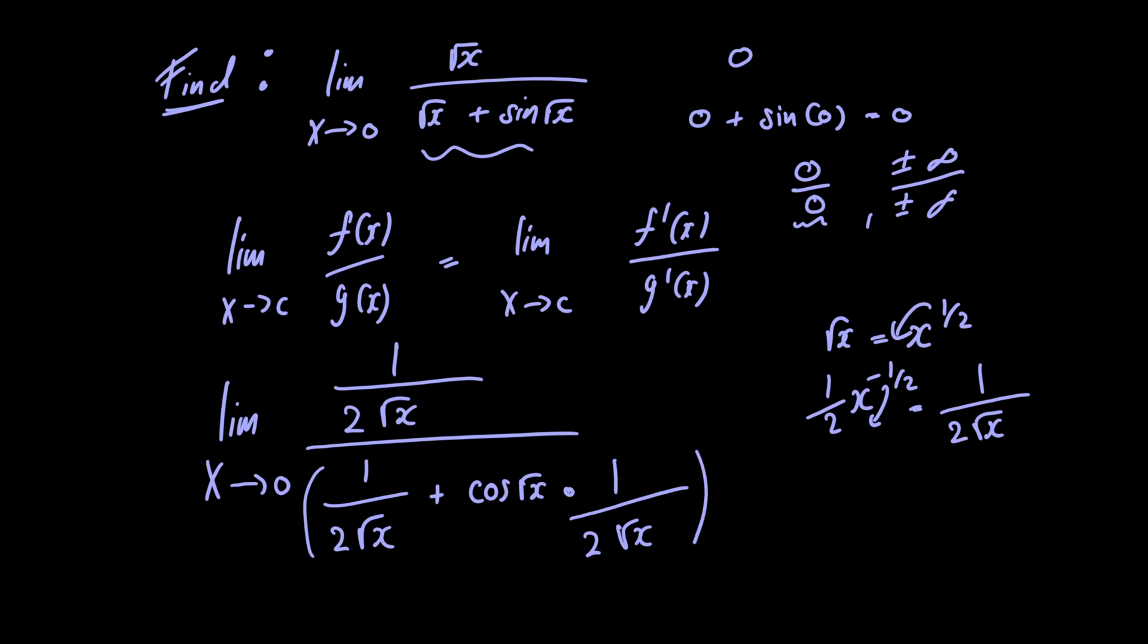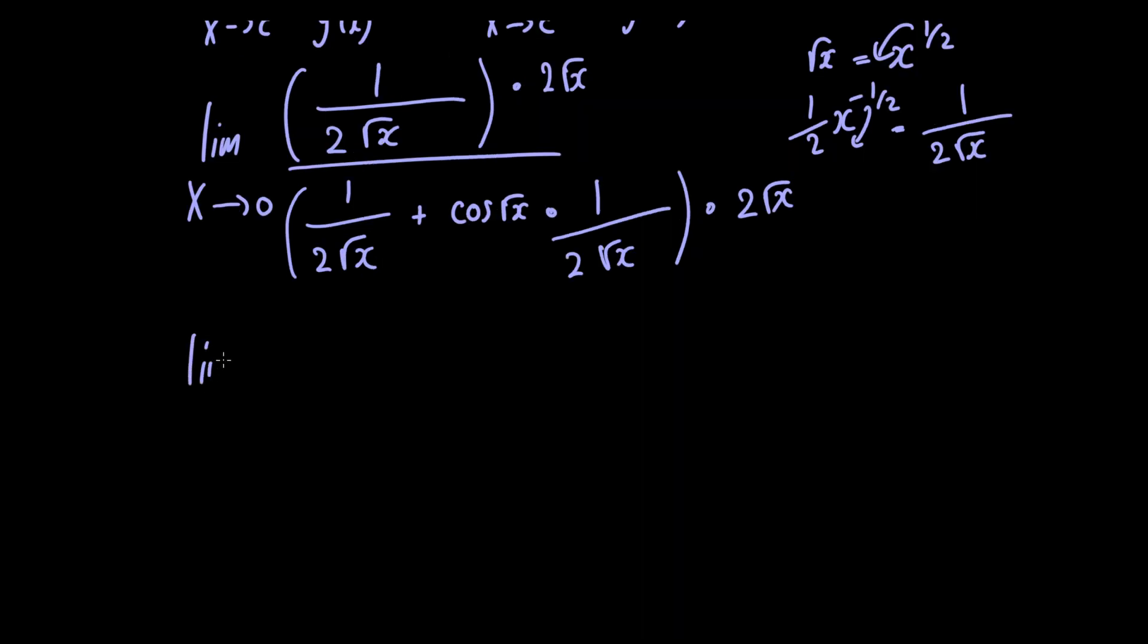To simplify, we multiply the numerator and denominator by 2√x. Taking the limit as x approaches 0, we have 1/(2√x) times 2√x equals 1, as these cancel.